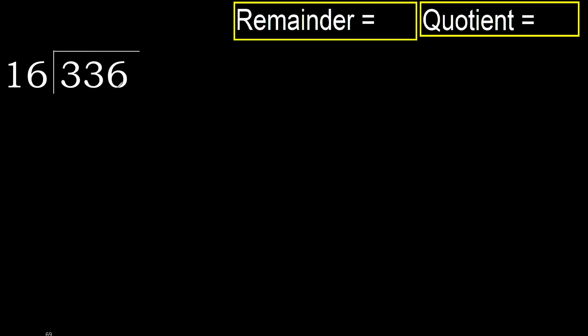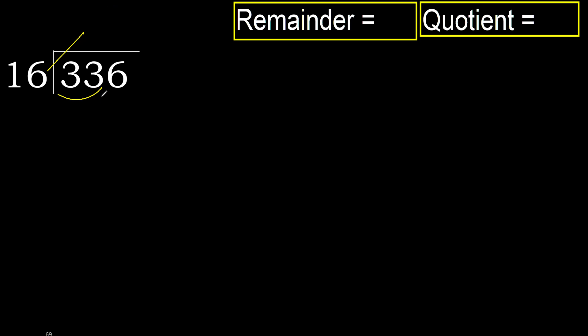336 divided by 16. 3 is less, therefore next. 33 is not less, therefore with 33. 16 multiplied by which number is nearest to 33 but not greater — 16 multiplied by 3 is 48, which is greater.